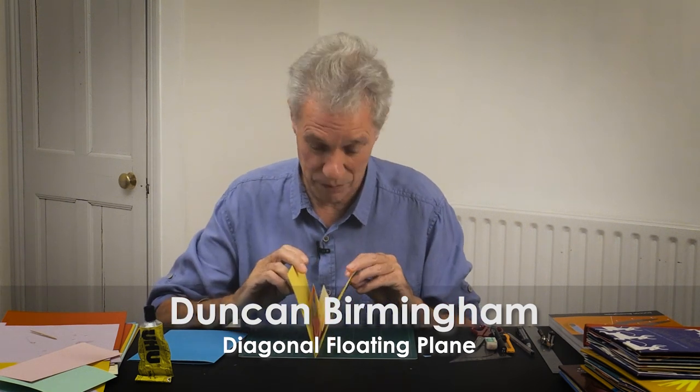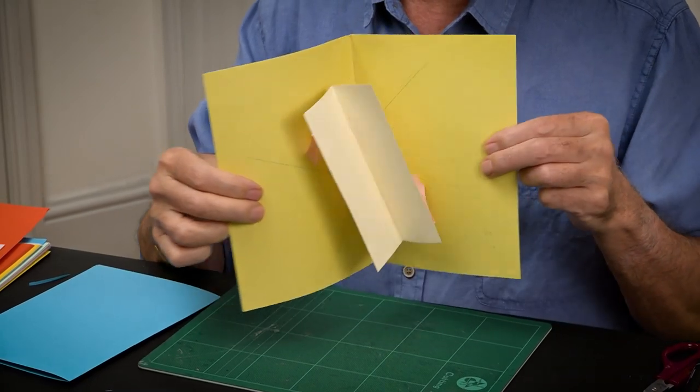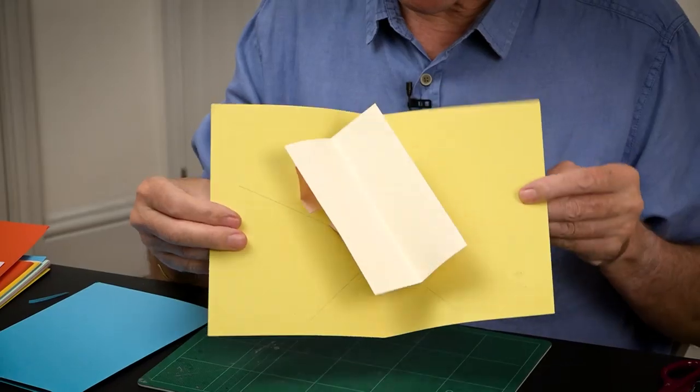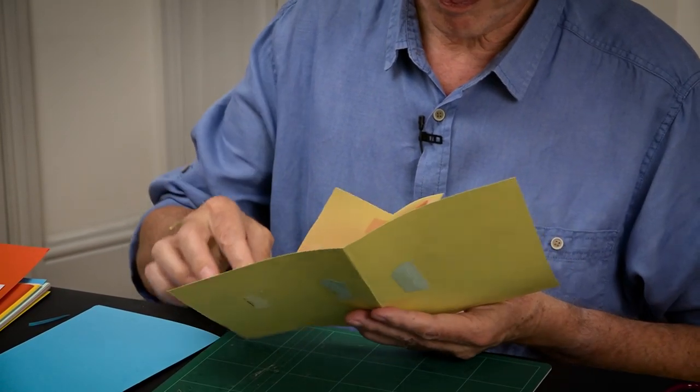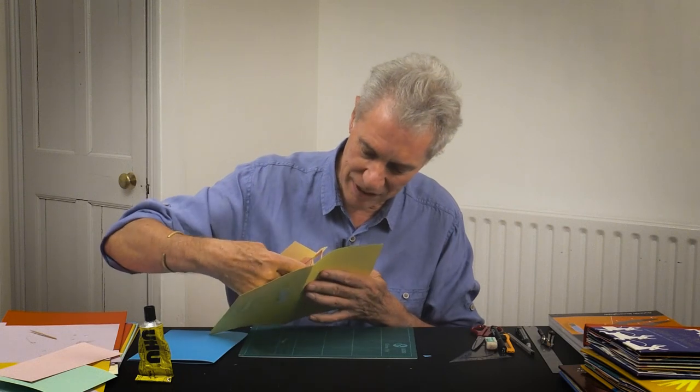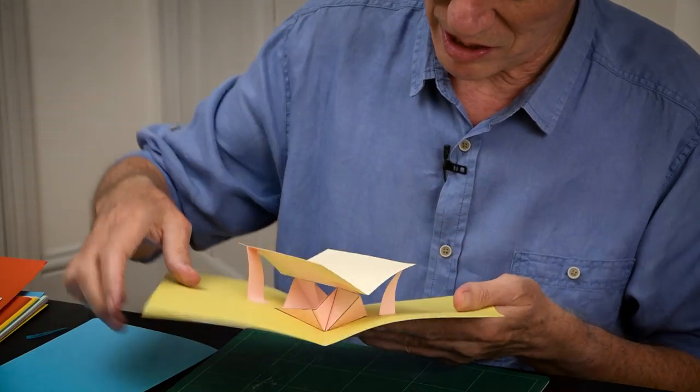This mechanism is an alternative floating plane. It has quite a nice action as it opens and closes, it sort of spins around. Underneath, it's quite complicated. Most pop-ups have only three folds - two where they stick to the page and one above the page. This is a weird one because if you look at these pieces at the end, above the page there's three folds, which is very unusual.